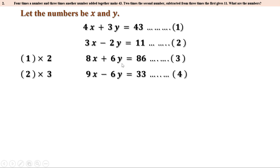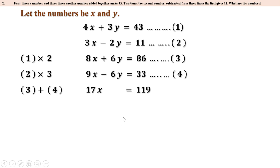Now look at the terms containing Y: plus 6Y and minus 6Y. When we add them together they become 0. So let us add the third and fourth equations. 8X plus 9X is 17X, plus 6Y plus minus 6Y is 0, and 86 plus 33 is 119. So we get 17X equal to 119, giving X equal to 119 divided by 17, which equals 7.